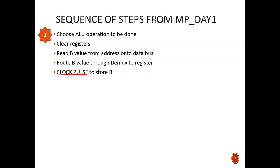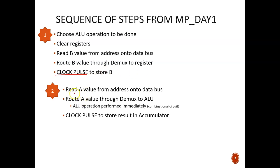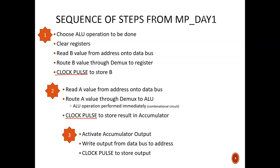Now that the B value is correctly stored, we move to step two: read the A value from the address onto the data bus and route it through the DMUX to the front end of the ALU. The ALU operation is performed immediately because it is a combinational circuit, so no extra clock cycle is needed. We do need a clock pulse ending step two to store the result into the accumulator. Step three is all about storing that result into memory: activate the accumulator output, write from the data bus to the RAM indicated by the address, and a clock pulse clocks the result into the register.